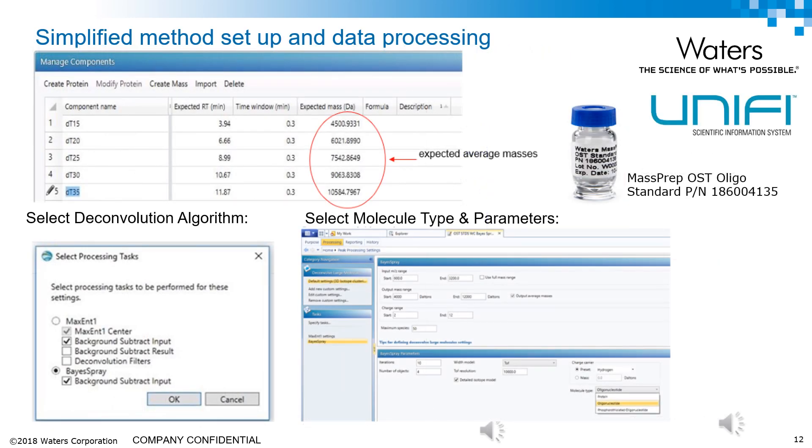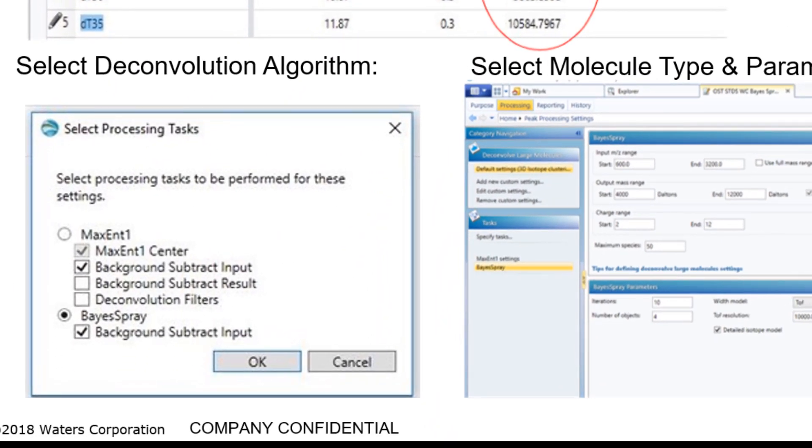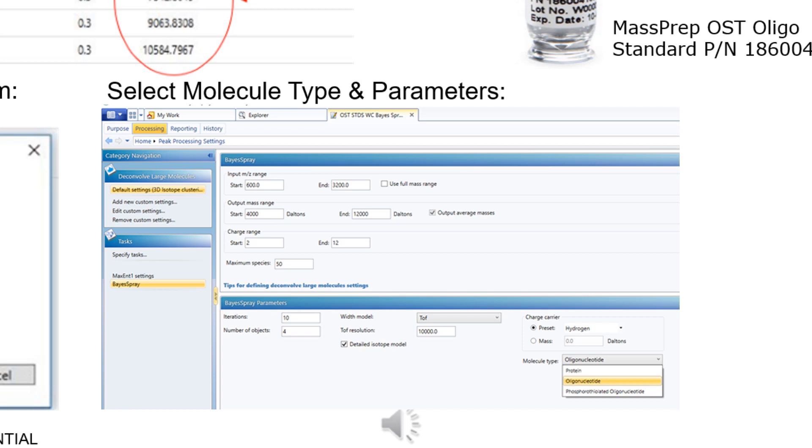In the method setup for the mass spectrometer, we define the expected molecular weight of the primers that we're manufacturing, and we work this out from the intended sequence for the primers. In this case we've just put in the molecular weight of the sequences that we know are in the standards. Then we can control and set up the processing parameters, including the parameters for deconvolution. And even amongst the few settings that there are, we can tell the instrument that we're looking at oligonucleotides so that it can automatically optimize the processing for them.